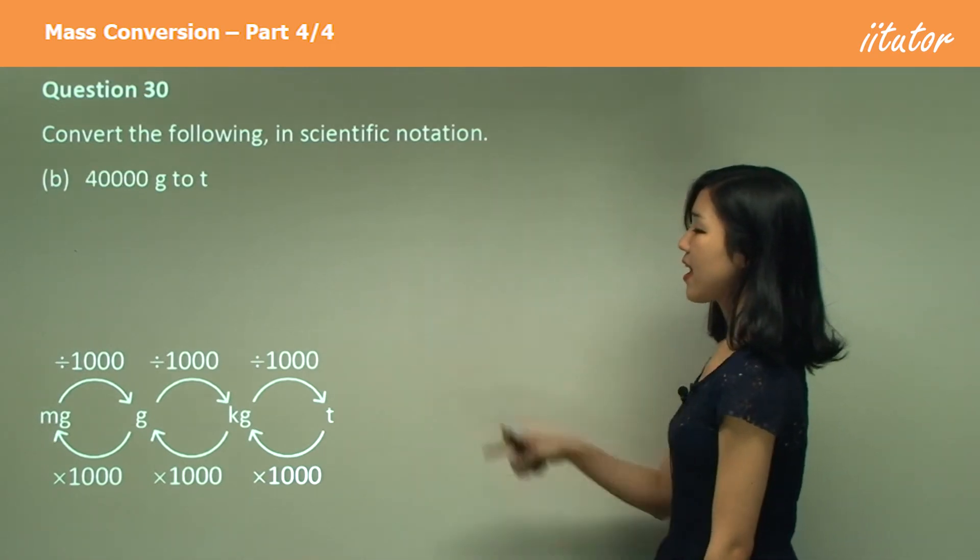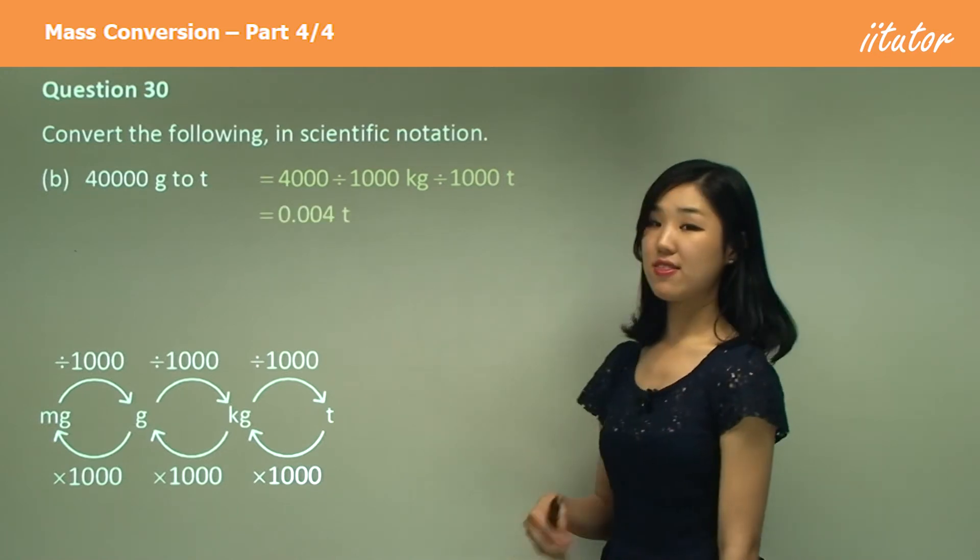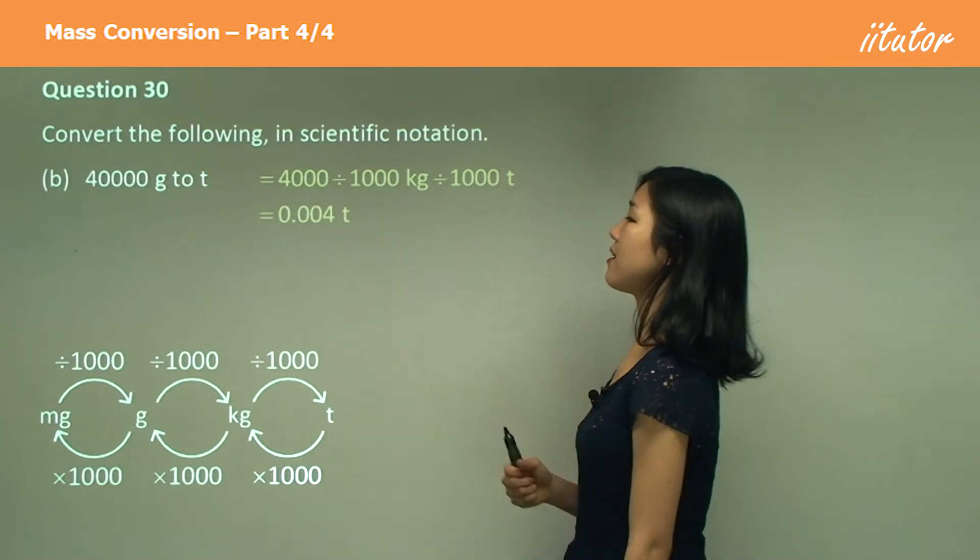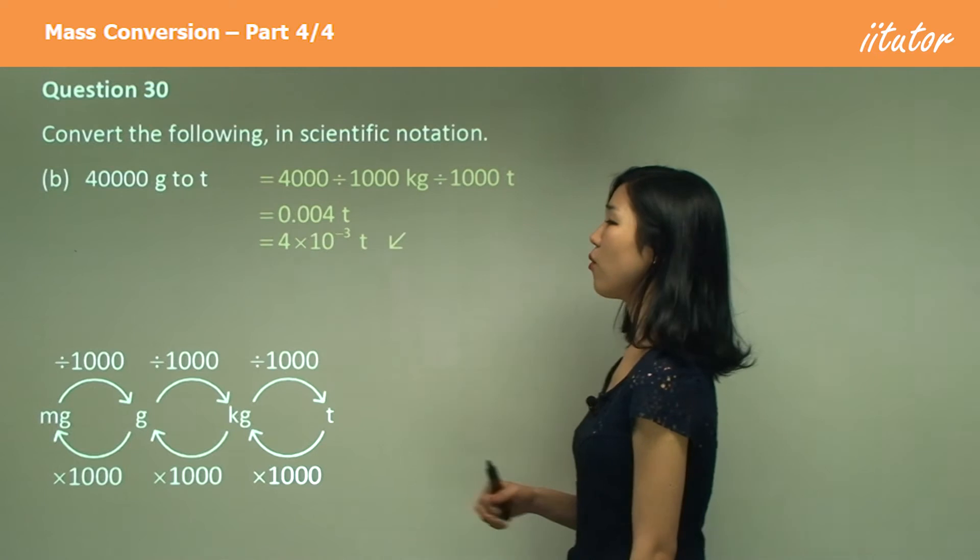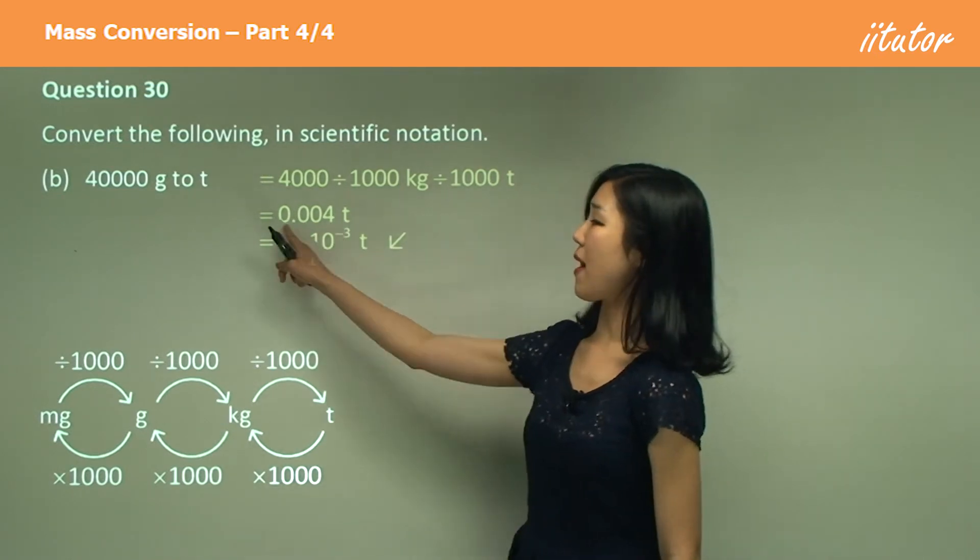Grams to tons again, divide by thousand two times, which means you get this kind of decimal. So again, in scientific notation, it's four times ten to the power of negative three, because we're going backwards.